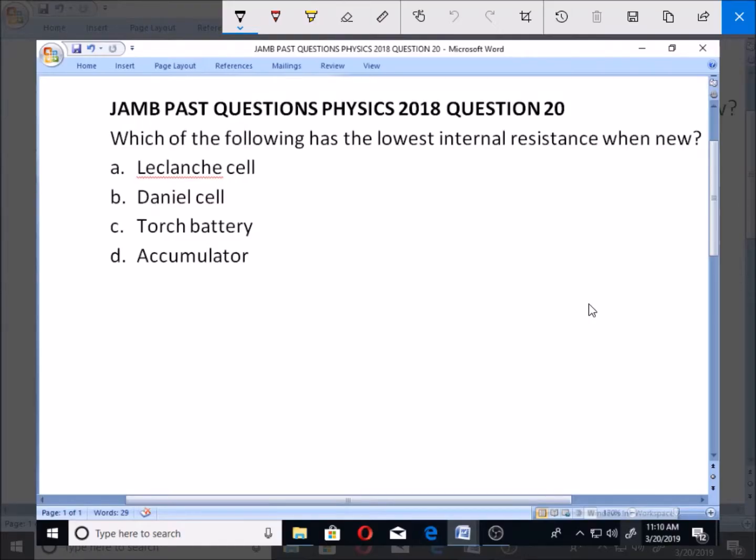Let's look at this question number 20 for JAMB Past Question Physics 2018. Which of the following has the lowest internal resistance when new?